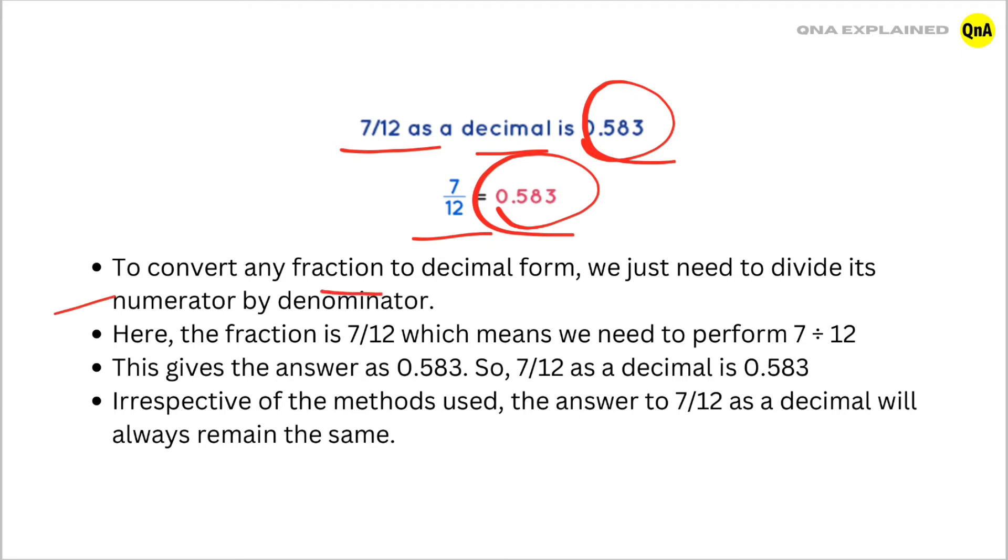To convert any fraction to decimal form, we just need to divide its numerator by denominator. Here, the fraction is 7 upon 12, which means we need to perform 7 divided by 12.